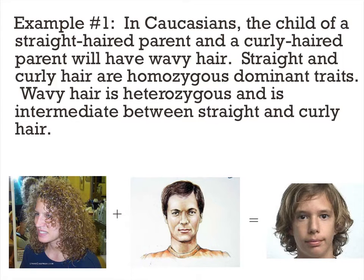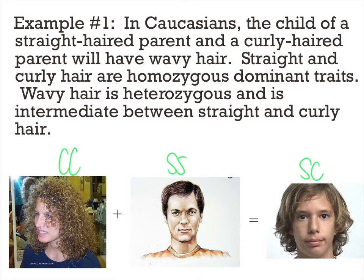One example is the child of a straight-haired parent and a curly-haired parent would have wavy hair. Straight and curly hair are homozygous dominant. So you would have big C big C, big S big S, and then big S big C would be the wavy hair. Your wavy hair will be heterozygous — it's in between straight and curly.